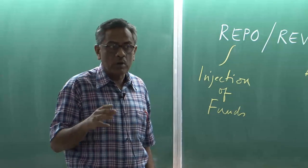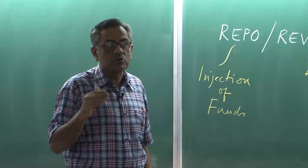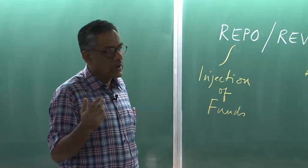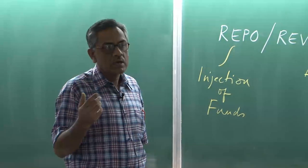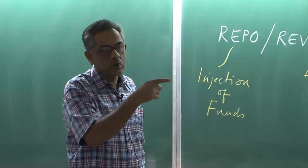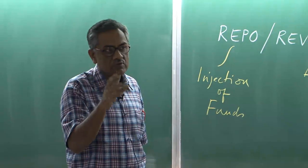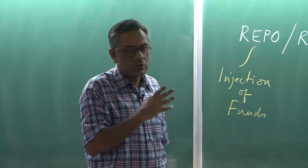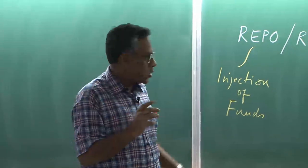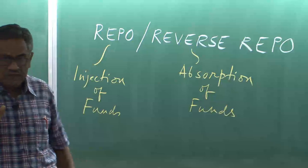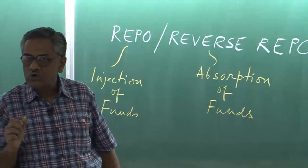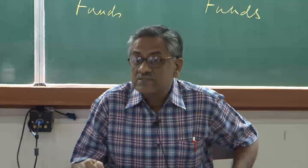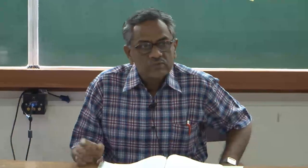In our country, the most important monetary policy instruments are CRR — SLR hardly changes — and the repo rate. Whenever RBI announces a policy, you will hear these two things on the news. Reverse repo means absorption of funds: if there is excess money, drain it out. Repo means injection: if there is a shortage, pump money in. It's about keeping a balance.